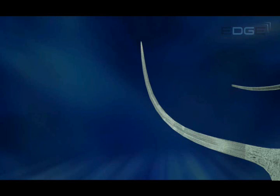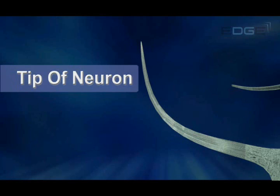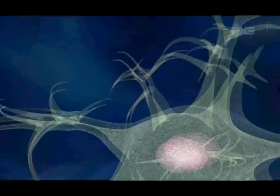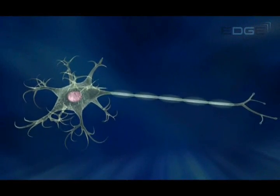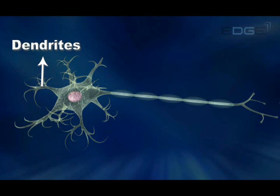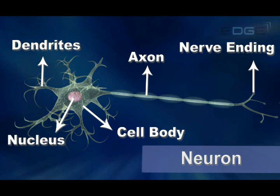This detection is done by specialized tips of a nerve cell or neurons. The specialized tips of a neuron which detect the information are called dendrites. Dendrites are present in all our sensory organs. A simple structure of a neuron is shown in the animation.